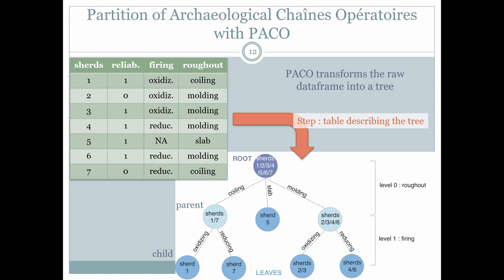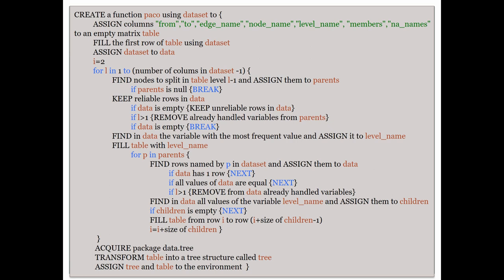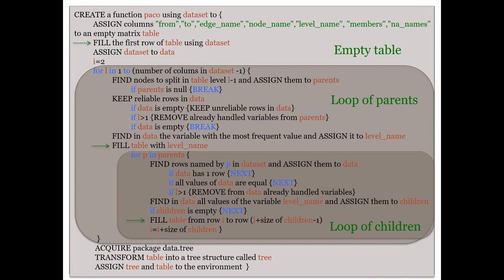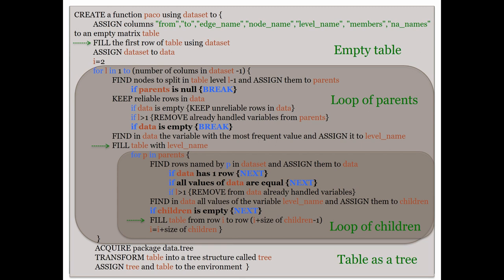There are as many children as distinct values provided by the parent. This is the code translated into pseudo-code. The first part creates a table to display the tree. The second part is structured by loops: the first loop finds parent nodes and chooses the division variables; the second loop creates children nodes, and the table is filled at each step. The division of a node stops if there is no value available or no variety in the values. The whole process stops if all nodes of the previous level are leaves, or if all variables have already been used in a division. The last part transforms the table into a tree.